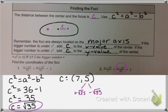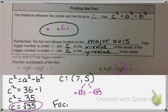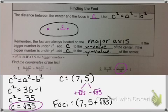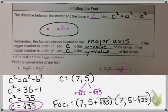The square root of 35 can't be simplified, but you should always check to see if you can simplify your radicals. So for my two foci, they are going to be 7 comma 5 plus square root of 35, and 7 comma 5 minus square root of 35. Those are my two foci. Sometimes your answers are going to have radicals in them, and that's okay.